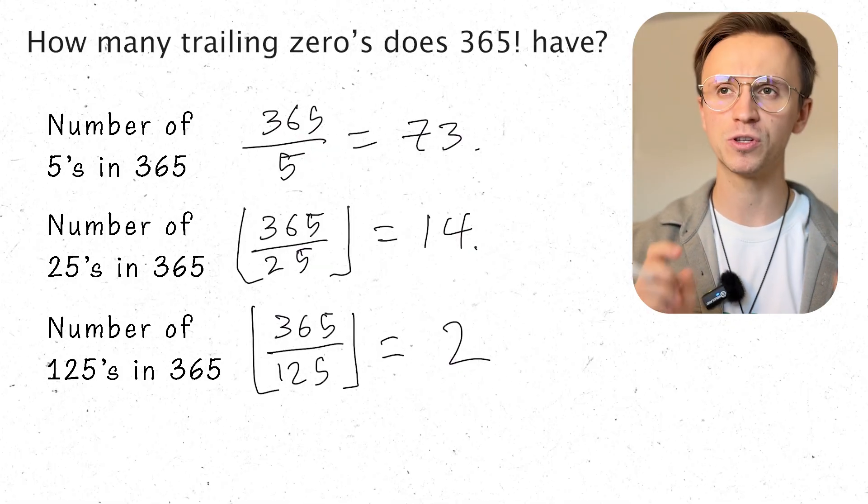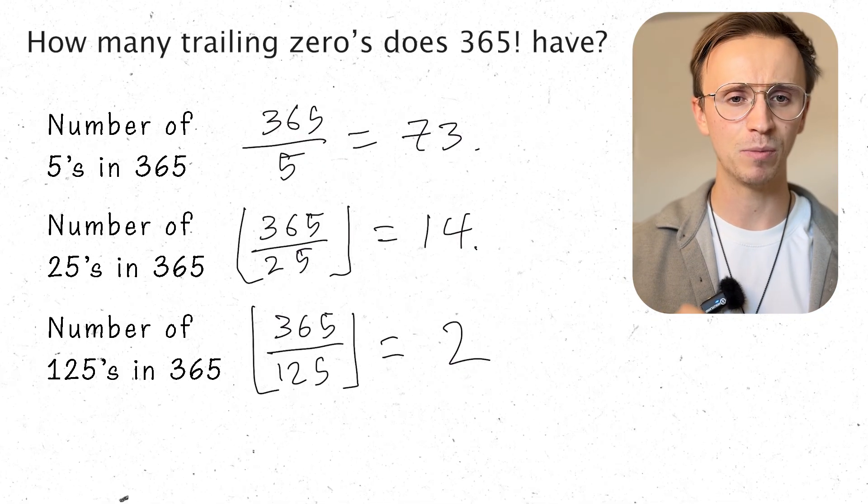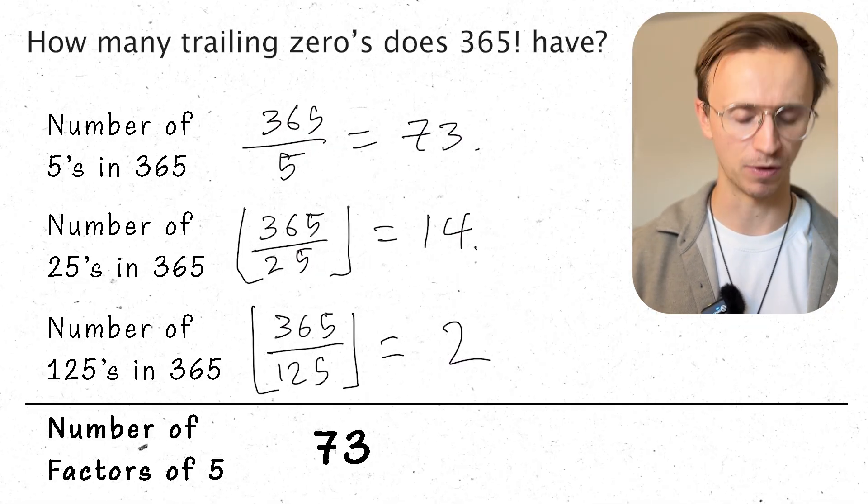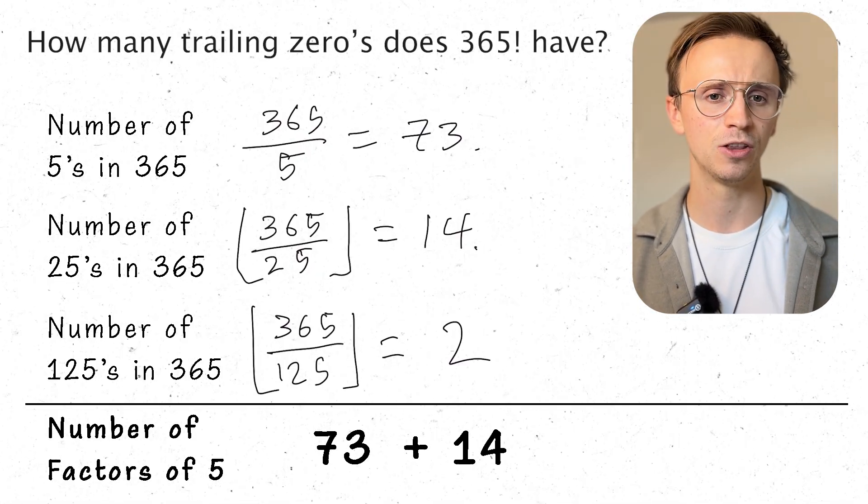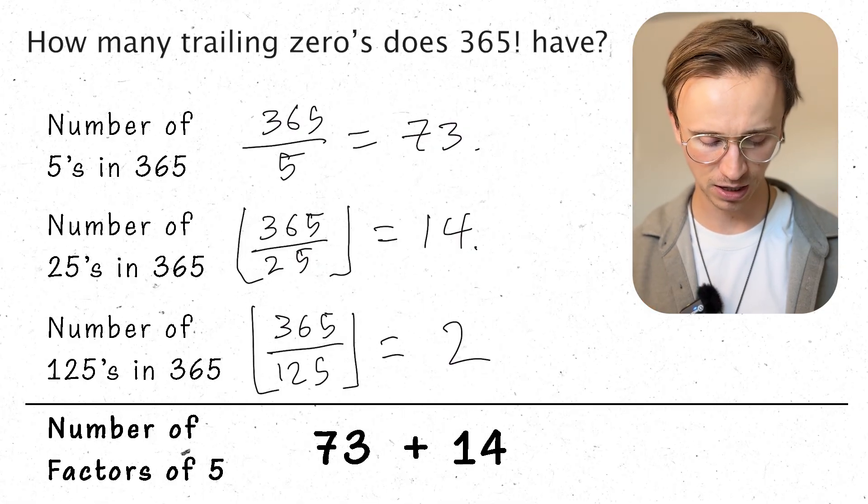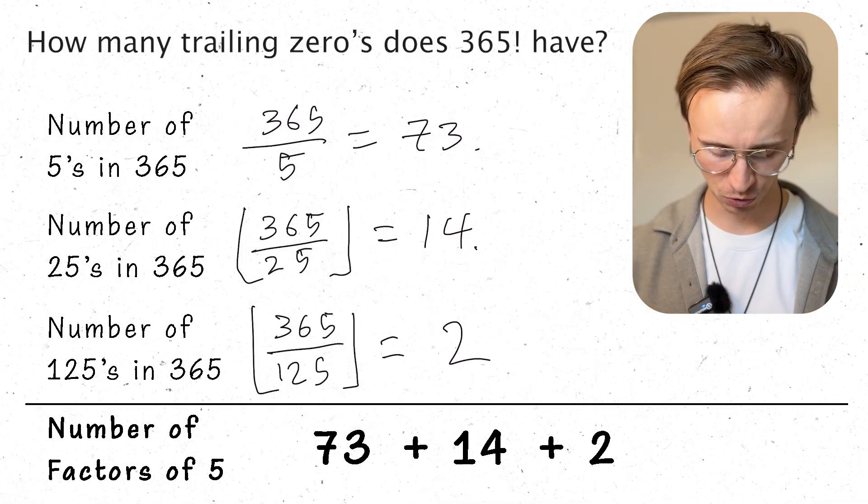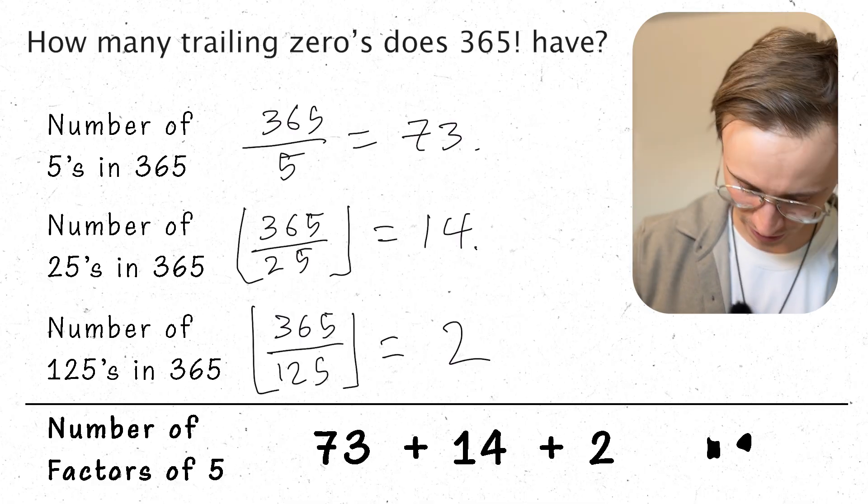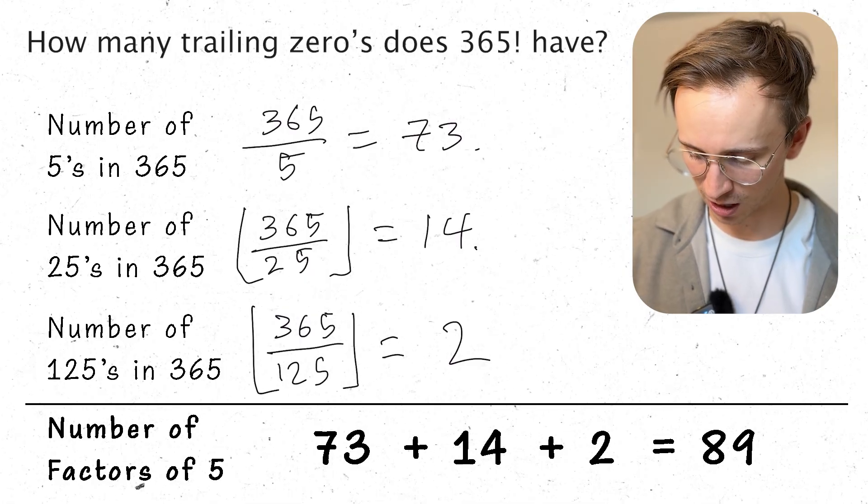Okay, and then timesing it by 5 again would be 500 and something, so way too large. So if I was to expand it all out and work out how many 5s I have, I have 73, that's just from the 5s. I have another 14 that comes from the 25s. And then I have another 2 that comes from the 125s. So in total I have 89 5s.